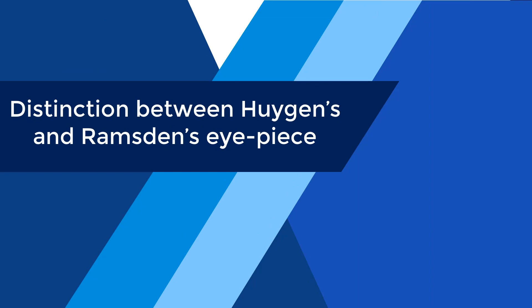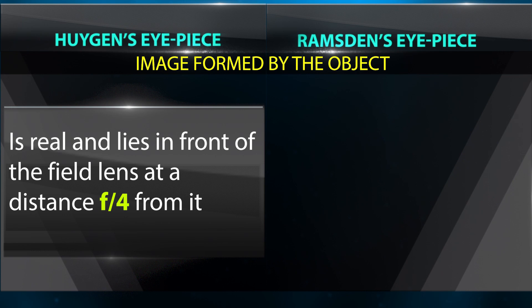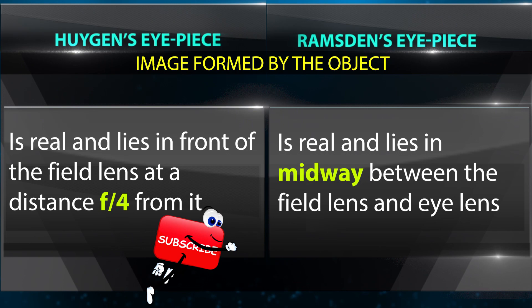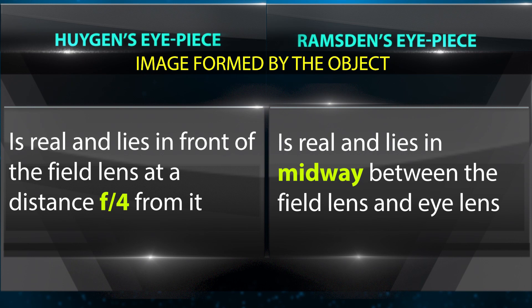Distinction between Huygens eyepiece and Ramsden eyepiece. In the Huygens eyepiece, the image formed by the objective is real and lies in front of the field lens at a distance f/4 from it. In the Ramsden eyepiece, the image formed by the objective is real and lies midway between the field lens and eye lens.